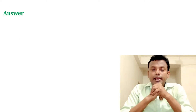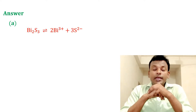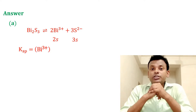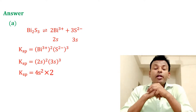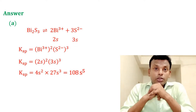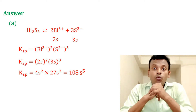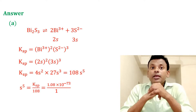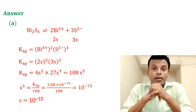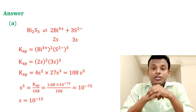Answer is option A. Bi2S3 gives 2Bi³⁺ plus 3S²⁻. Solubility is s, so [Bi³⁺] = 2s and [S²⁻] = 3s. Ksp equals (2s)² times (3s)³ equals 108·s⁵. So s⁵ equals Ksp/108 equals 10 to the power minus 75. Therefore s equals 10 to the power minus 15. Answer is option A.